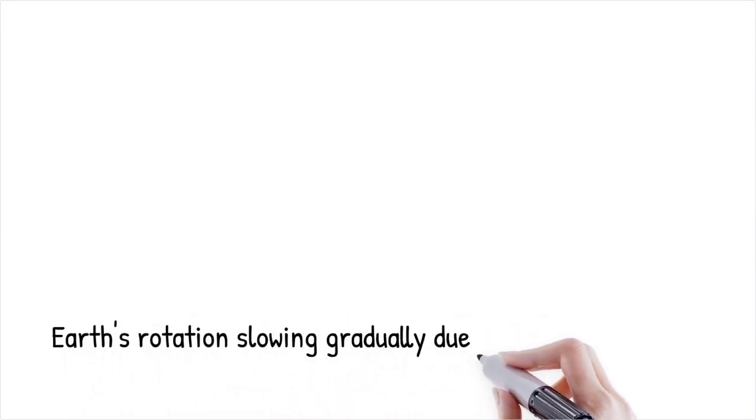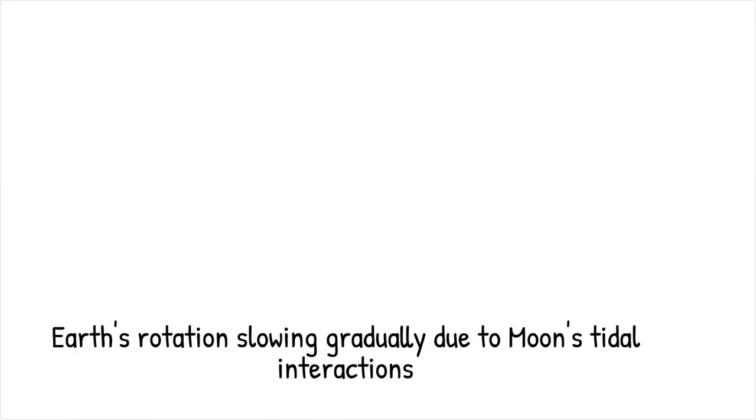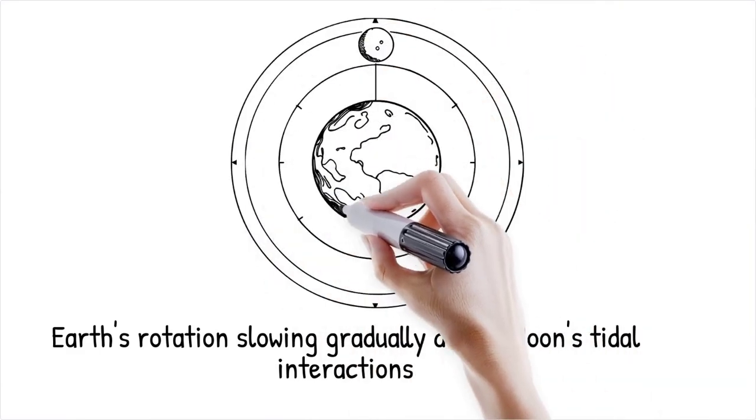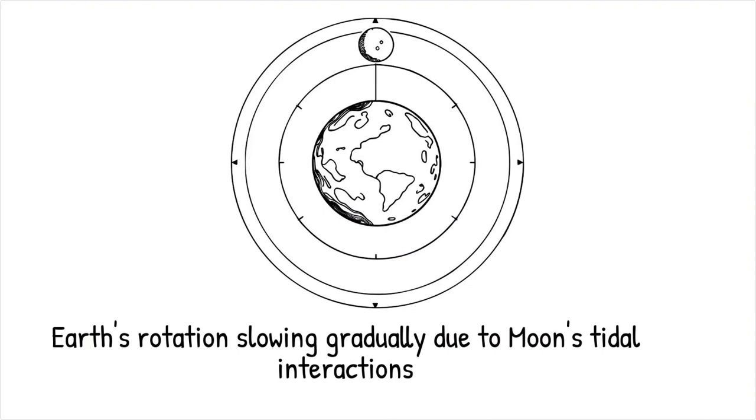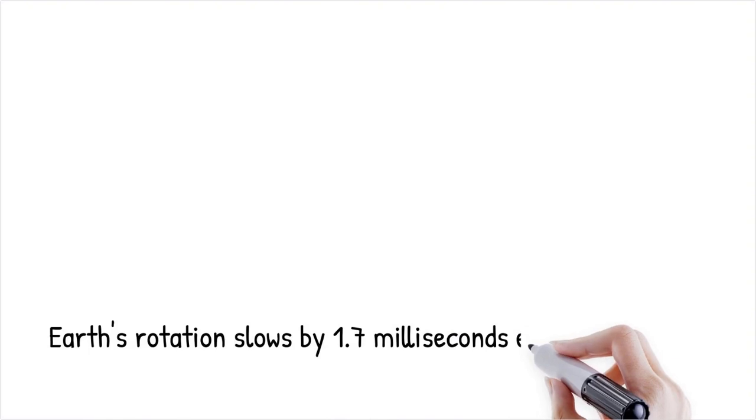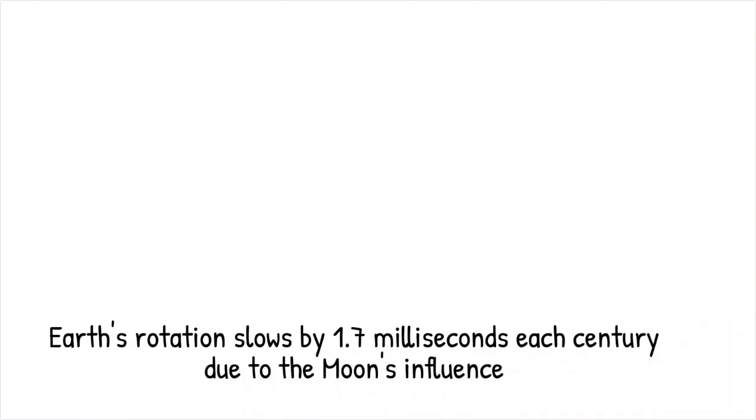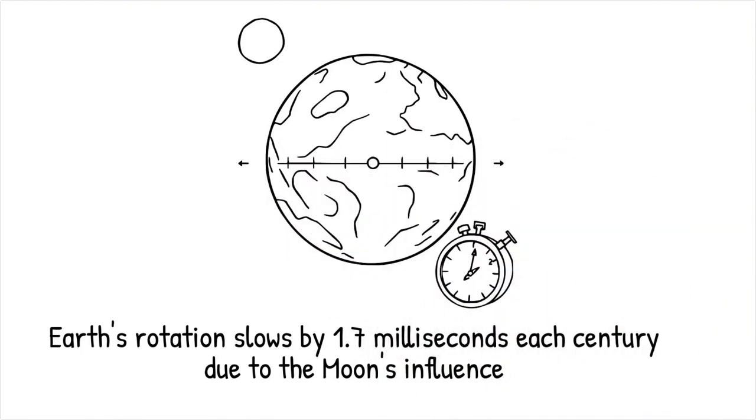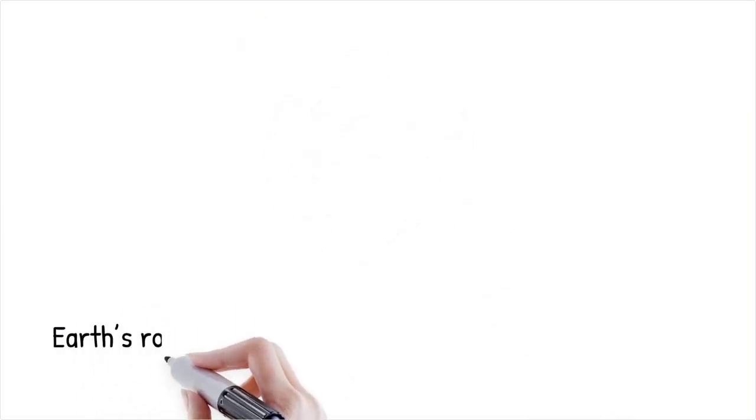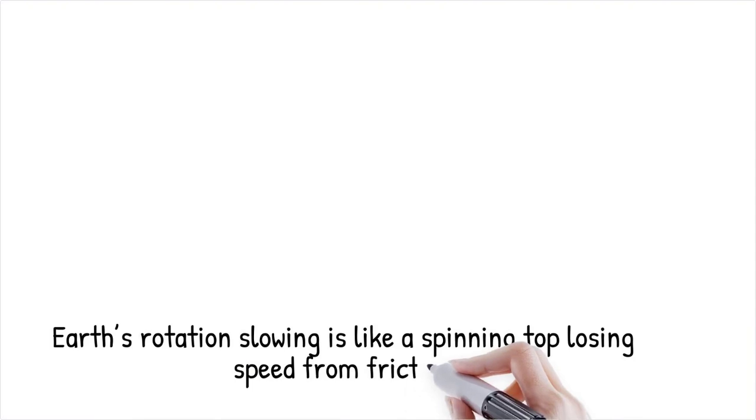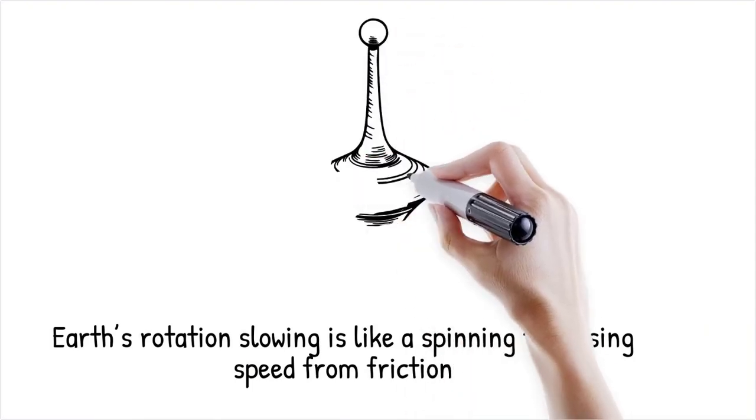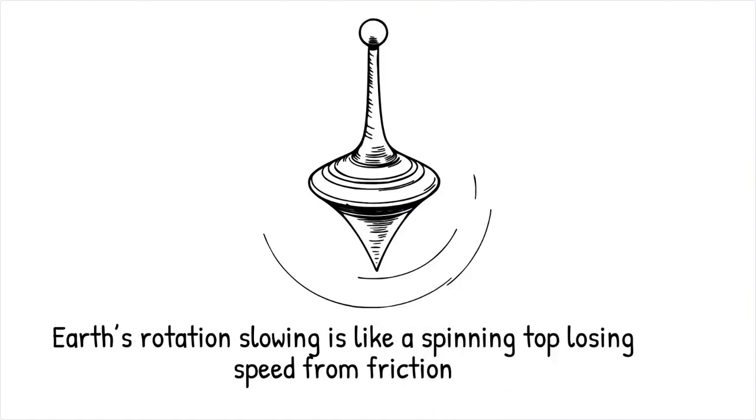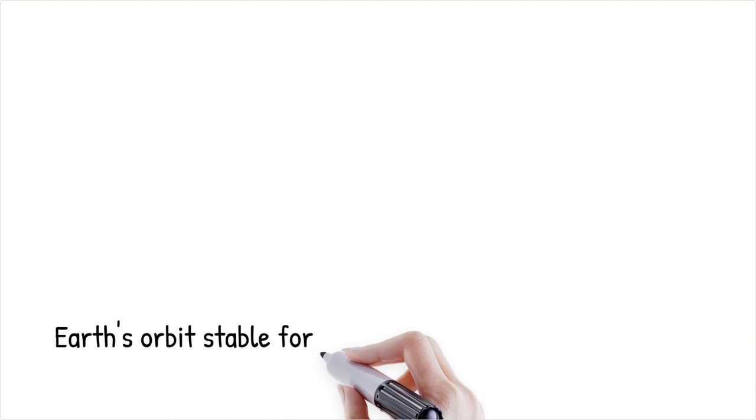Earth rotates on its axis due to the conservation of angular momentum, a fundamental principle in physics that ensures rotating bodies maintain their motion unless acted upon by an external force. This rotation was established during Earth's formation when colliding planetary bodies imparted angular momentum to the young planet. The speed of Earth's rotation is gradually slowing due to tidal interactions with the Moon, but the process is extremely slow, occurring over millions of years. Precise measurements show that Earth's rotation is slowing by about 1.7 milliseconds per century due to the Moon's gravitational influence. Like a spinning top gradually slowing due to friction, Earth's rotation is gradually affected by tidal forces, but it will take billions of years before noticeable changes occur.